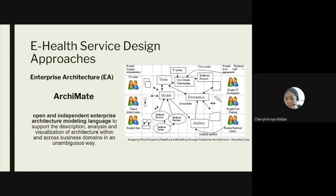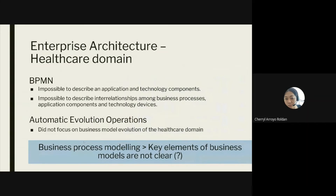ArchiMate allows different access for various clinical specialists — for example, someone with heart issues may also need to see doctors for blood sugar and neurology. Using a specific system, health information can be shared across those specific doctors. So focusing on the healthcare domain, BPMN (Business Process Modeling Notation) is also discussed — the chapter found that it is impossible to fully describe application and technology components, and impossible to describe interrelationships among business processes, application components, and technology devices using BPMN alone.